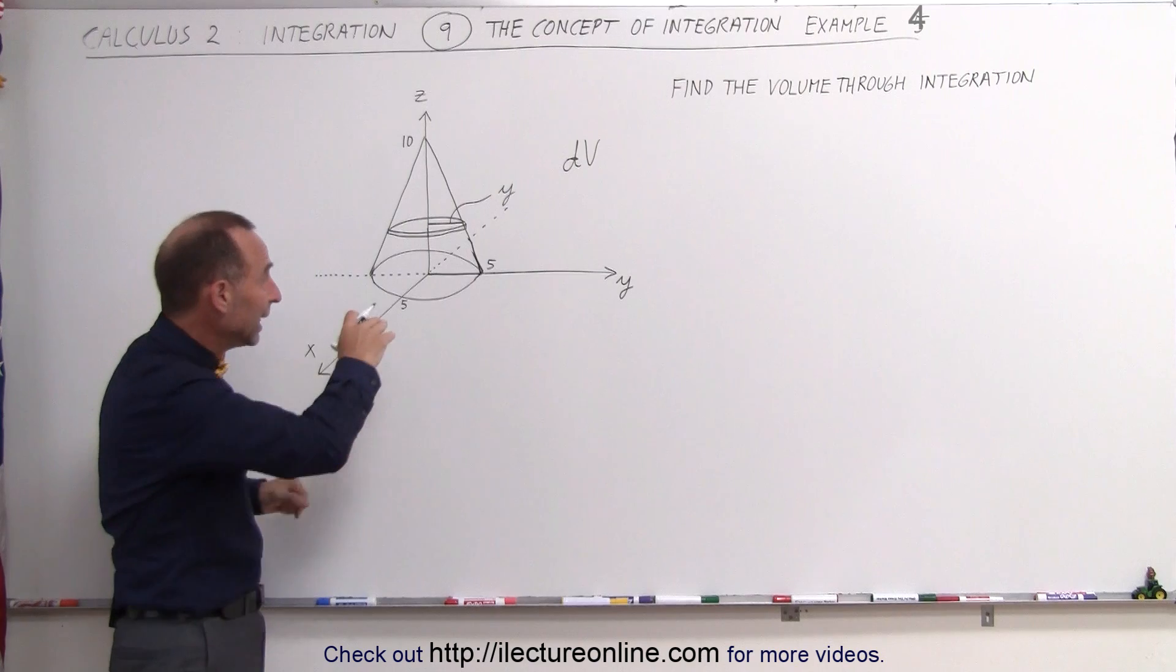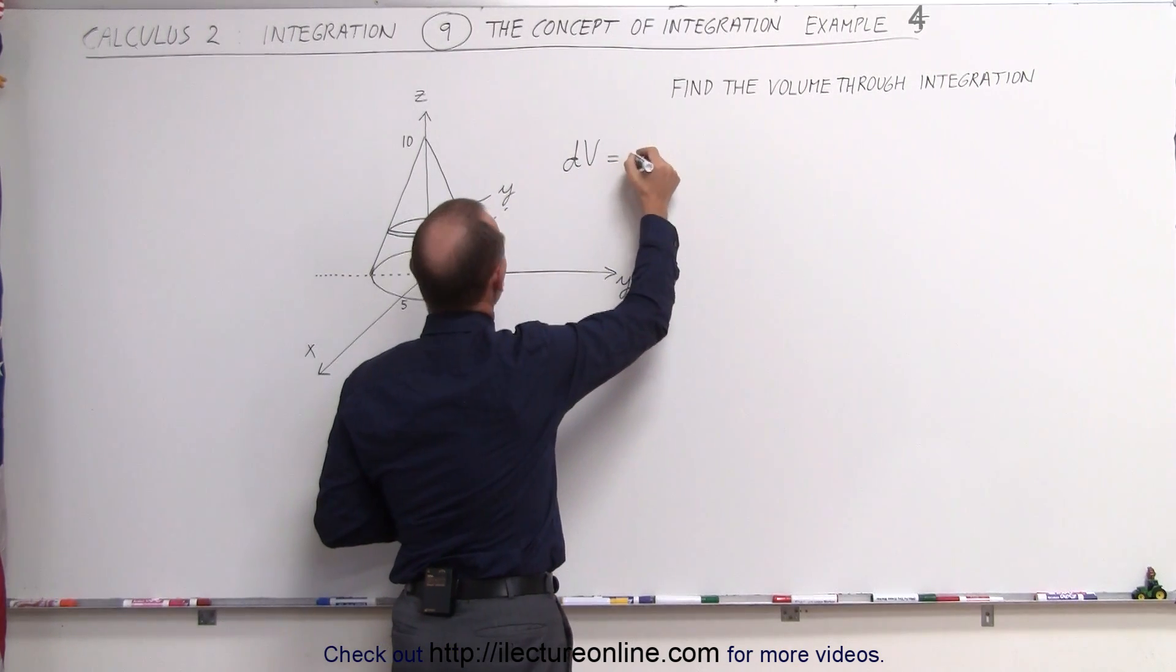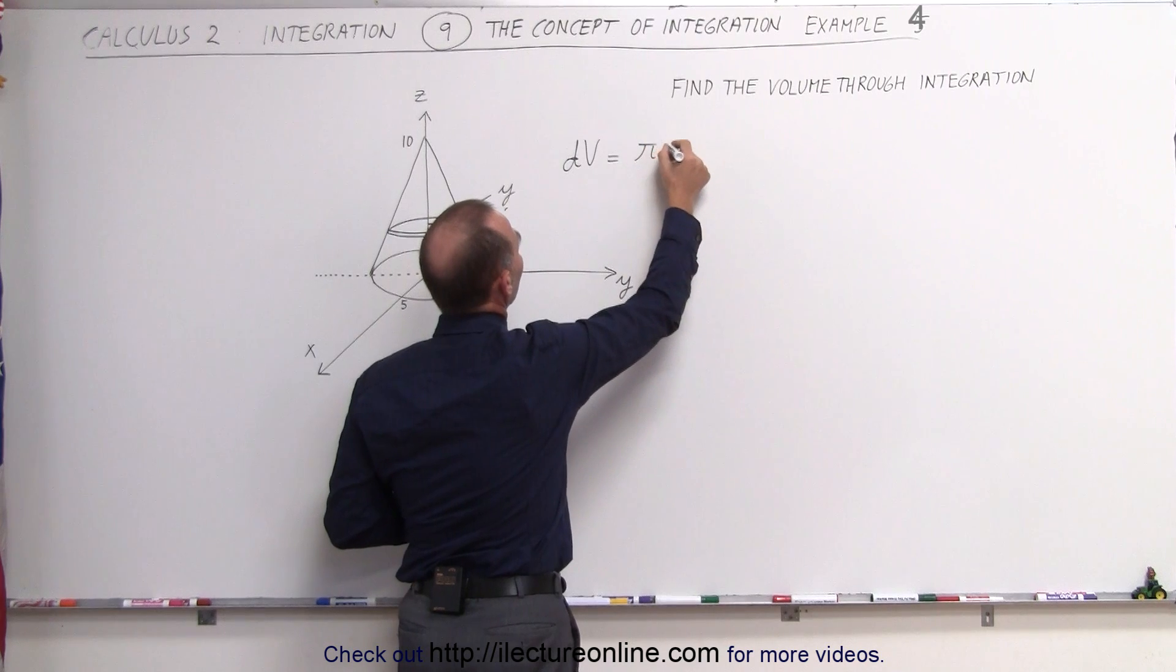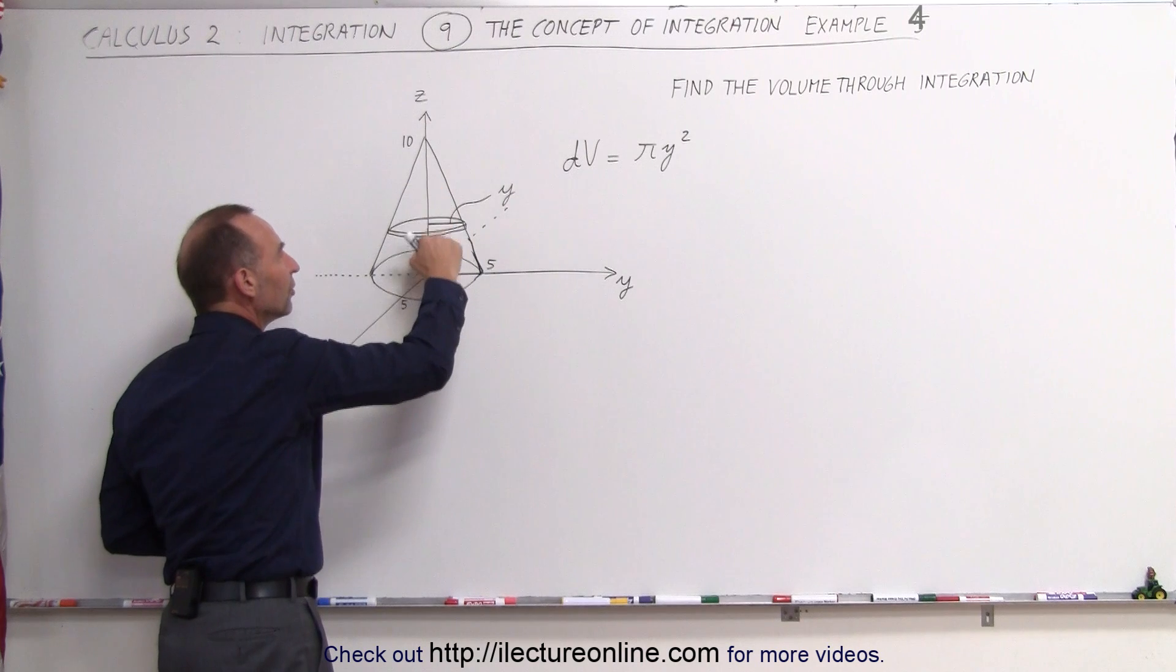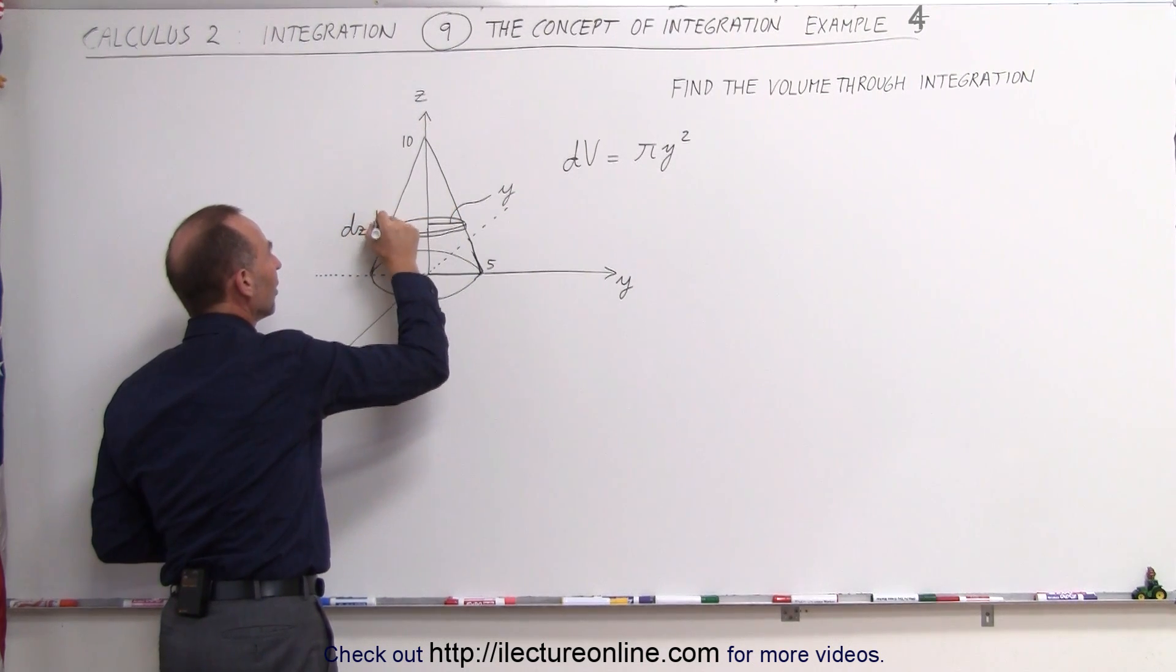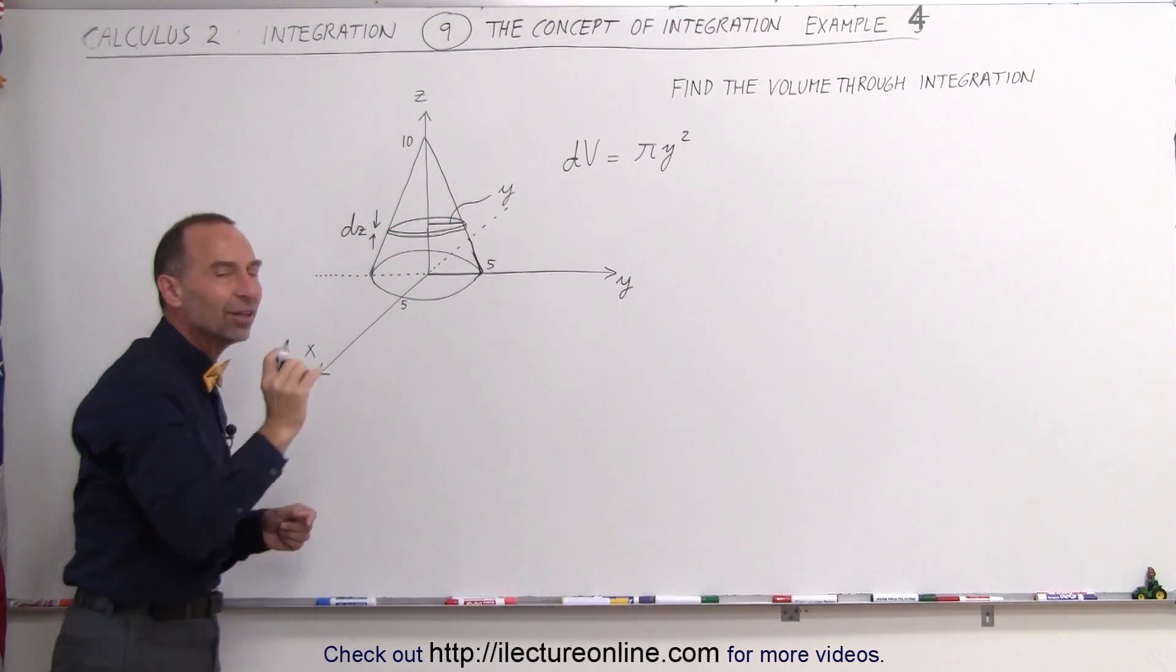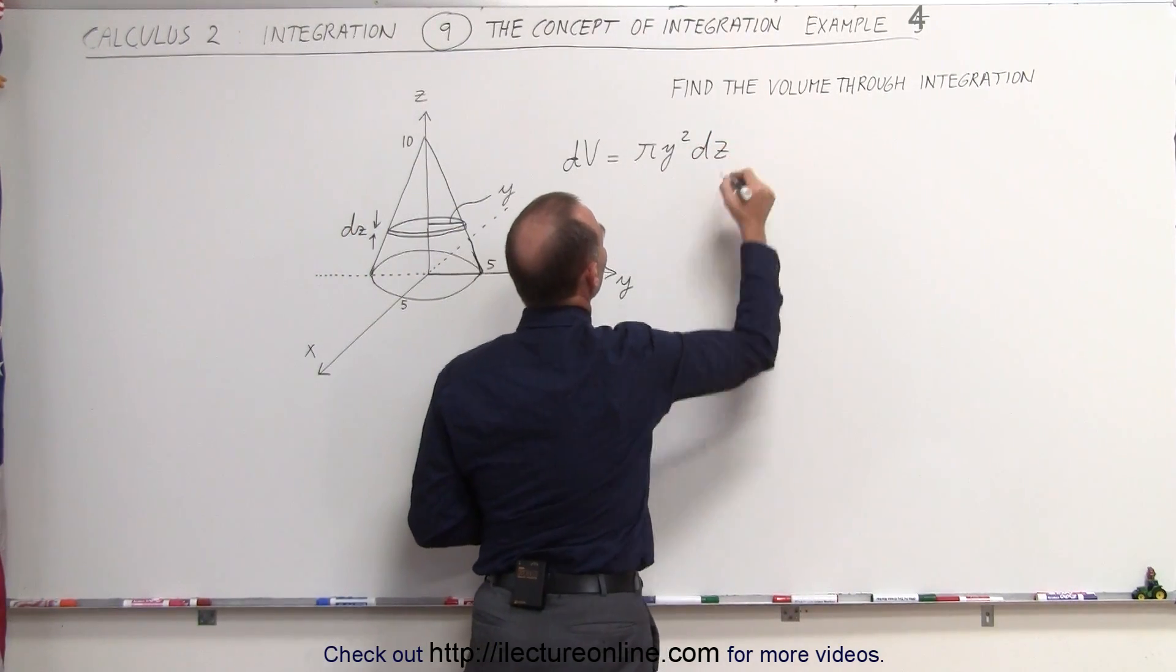Of course, the volume of the slice like that would be the area times the thickness. The area would be given by π times y squared. That's the area of the circle. Now, we multiply that times the thickness, and it's a small little distance in the z direction. So we're going to call that small little thickness dz, a small little change in z.